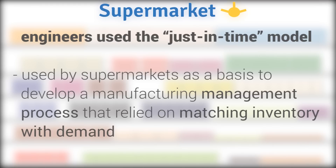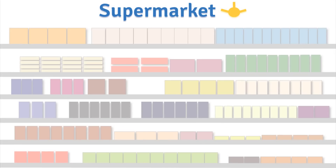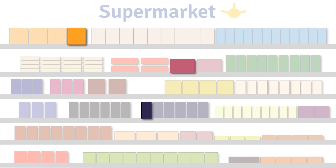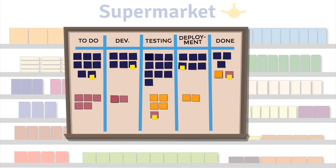The engineers used the just-in-time model used by supermarkets as a basis to develop a manufacturing management process that relied on matching inventory with demand in order to increase both quality and throughput. The result: Kanban.